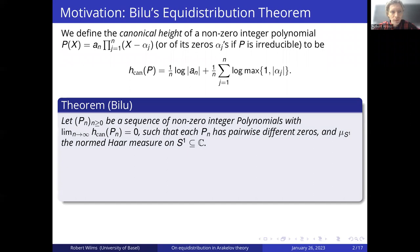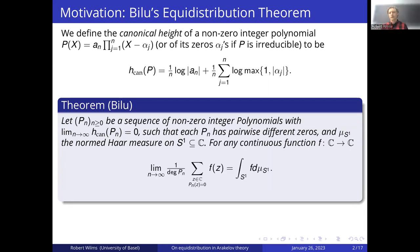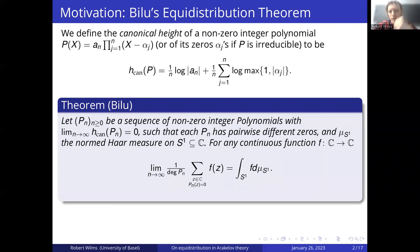The theorem by Beedle states that if you take a sequence of non-zero integer polynomials such that the height is going to zero and the zeros of each p_n are pairwise different, and if mu is the normalized Haar measure on the circle S^1 in C, then for any continuous test function f from C to C, the zeros are for n to infinity distributed like the Haar measure on S^1. Meaning that if you evaluate f on the average of the zeros of p_n, then for n to infinity, this equals the integral over S^1 with respect to the Haar measure.